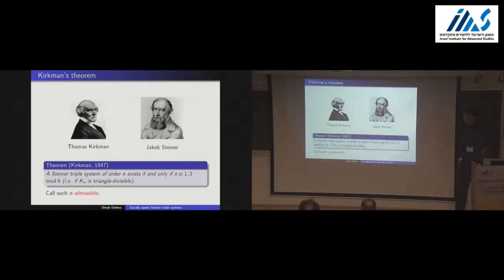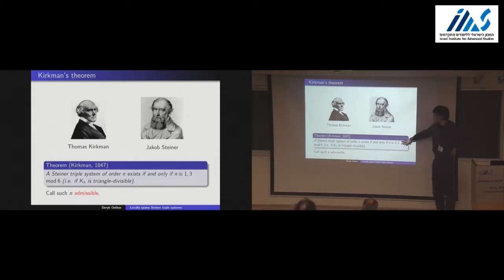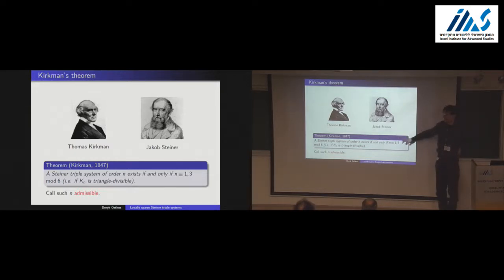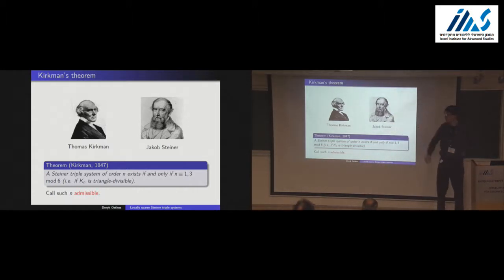A Steiner triple system of order N exists if and only if N is congruent to 1 or 3 modulo 6, which is equivalent to saying the complete graph on N vertices is triangle divisible. We call such N's admissible.